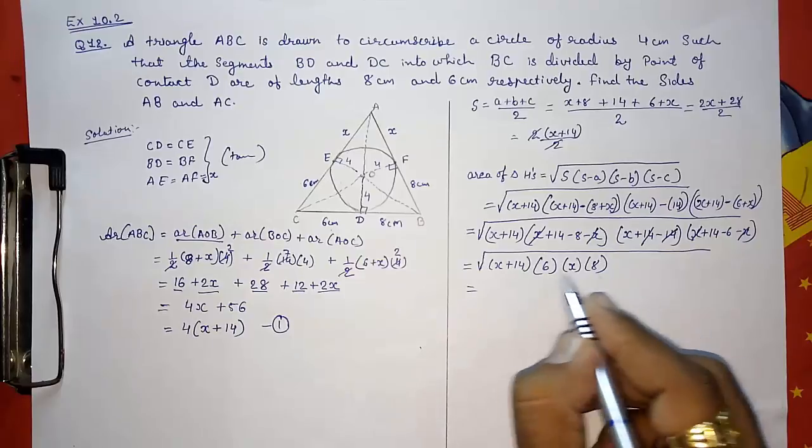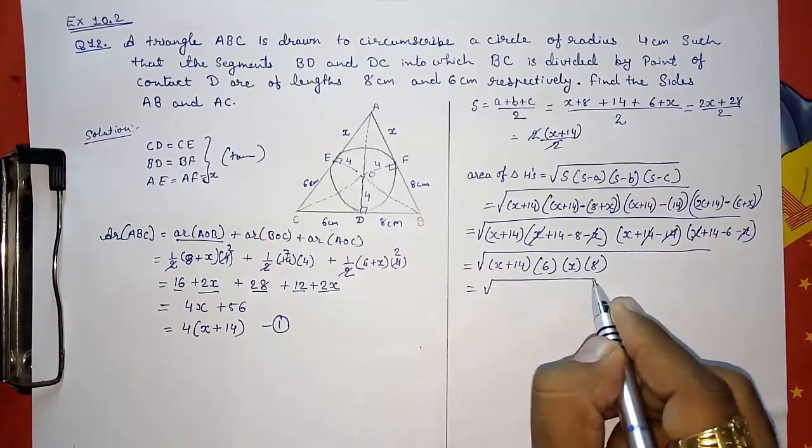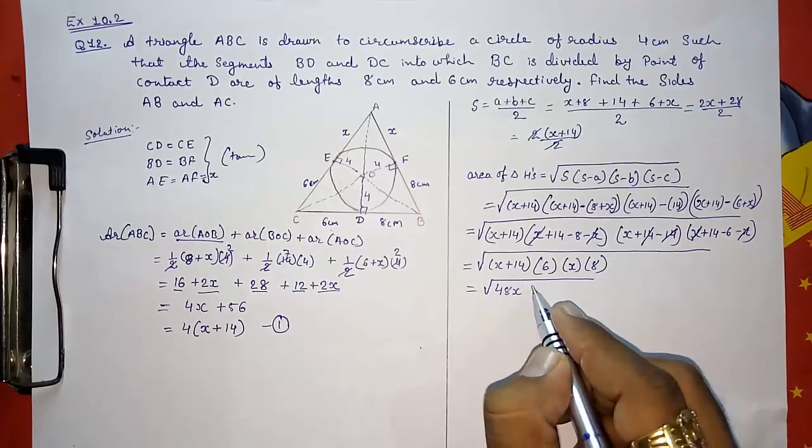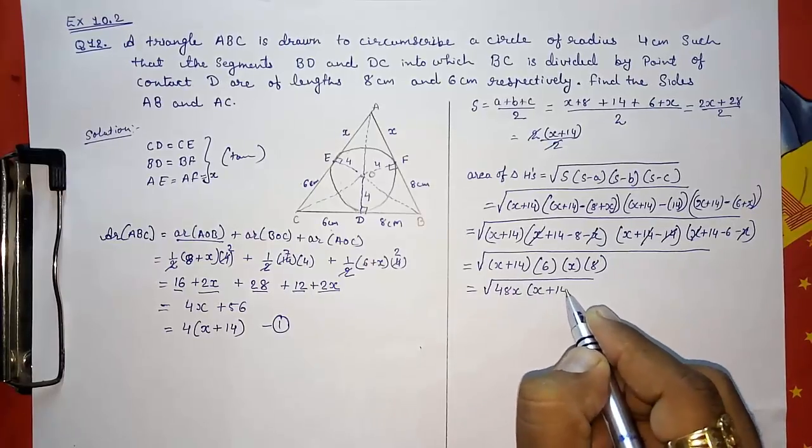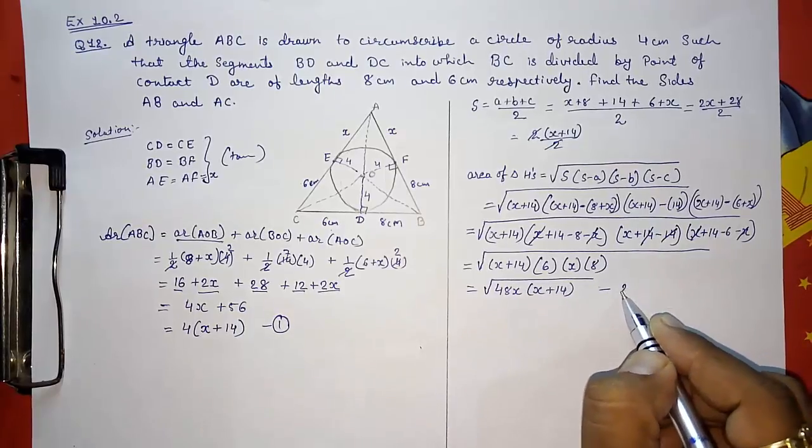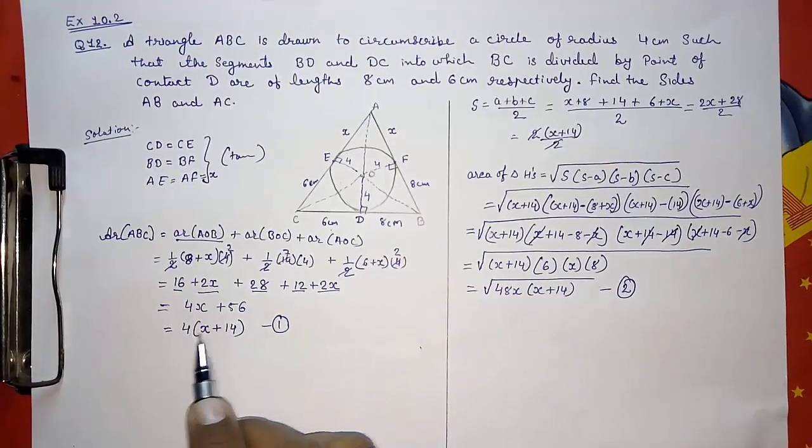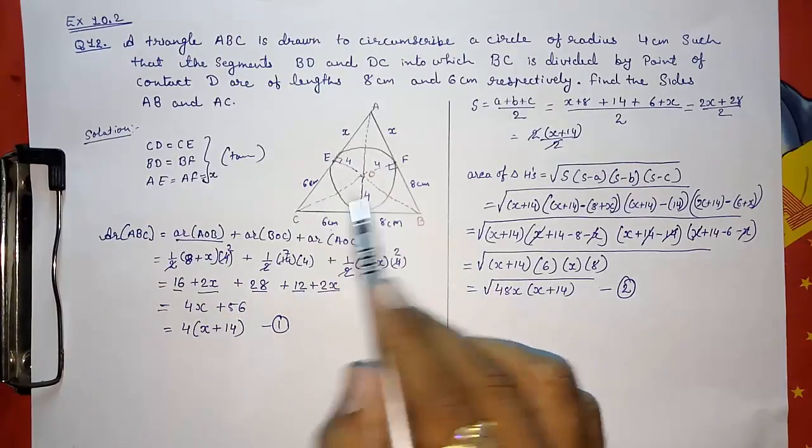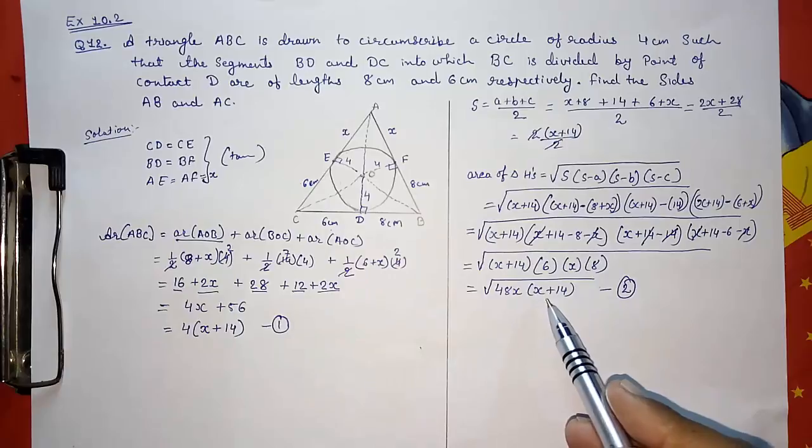Again I am writing it here: (X plus 14) into bracket, X minus X, 14 minus 8 is 6. Here 14, 14 get cancelled, X. And here again X, X get cancelled, 14 minus 6 is 8. So this will become—multiply these three—you will get 48, 48X, and this will remain X plus 14. Look here, here also we are getting X plus 14. Here also we were getting X plus 14. So that's why I had taken this common. Now this was our answer by simple formula and this was our answer by Heron's.